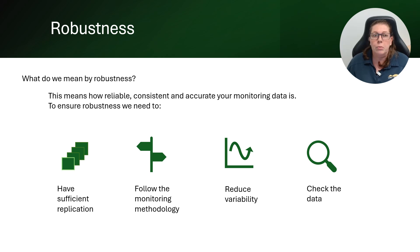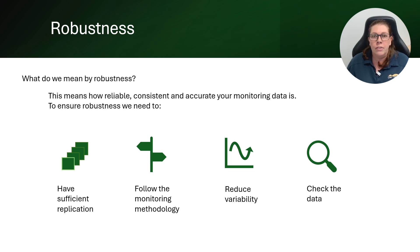In this presentation we'll be focusing on one half of the equation, and that is robustness. The other half is representativeness. So what do we mean by robustness? Basically it's how well you did your monitoring to ensure that your data is reliable, consistent, and accurate. Ensuring robustness means we can have confidence that our monitoring data is an adequate representation of the condition of an asset or landscape and the change in that asset or landscape.